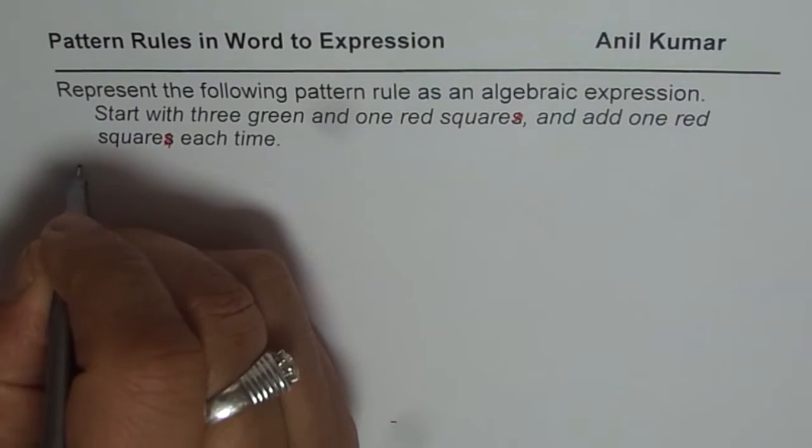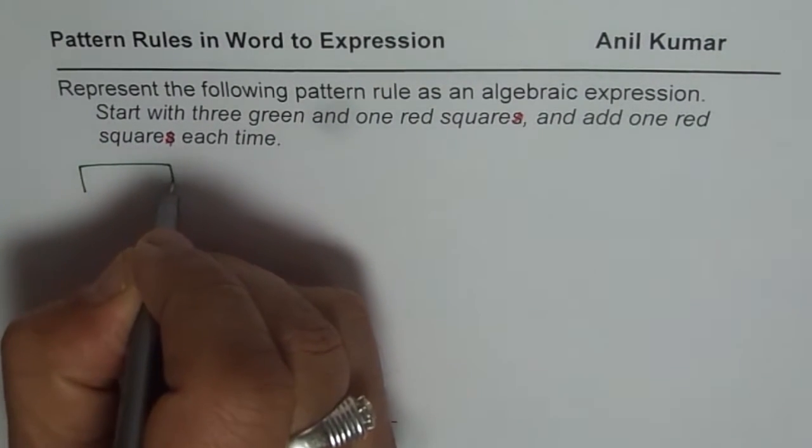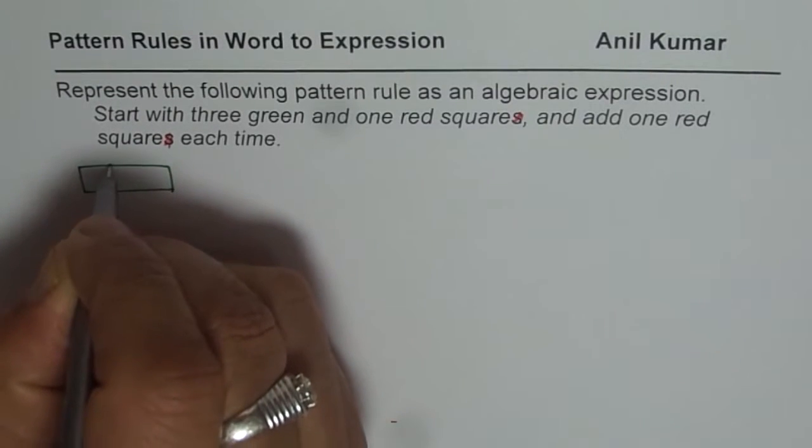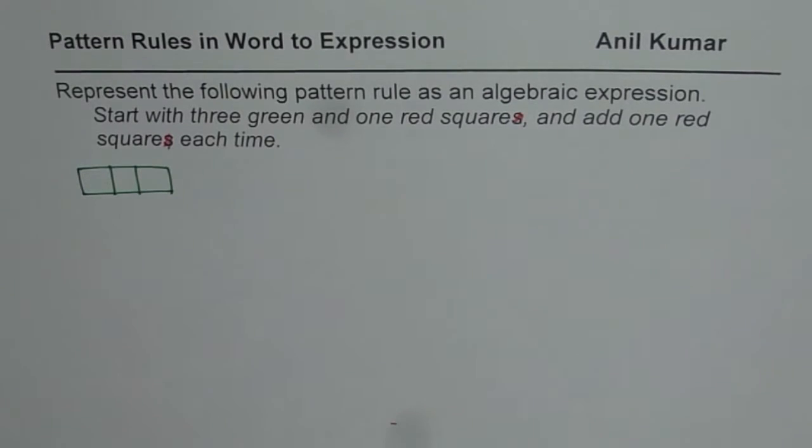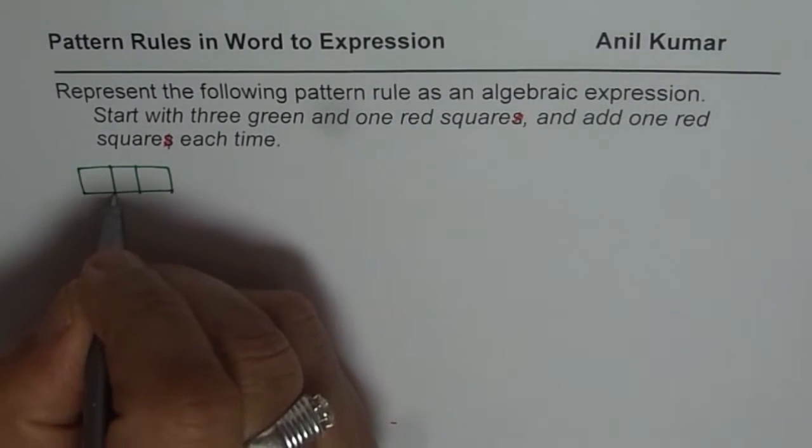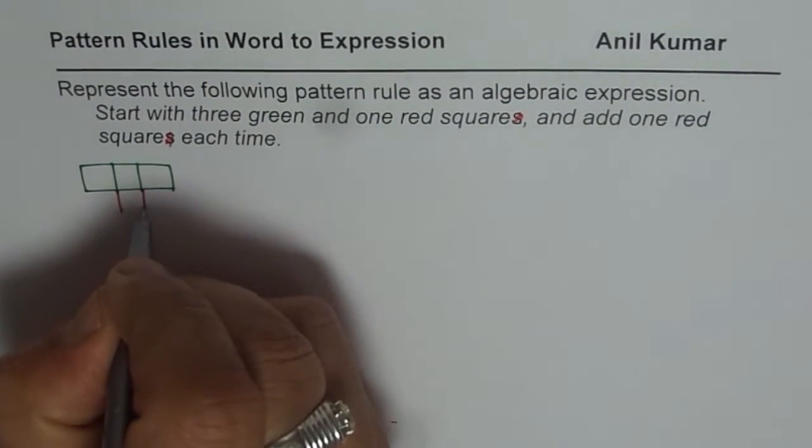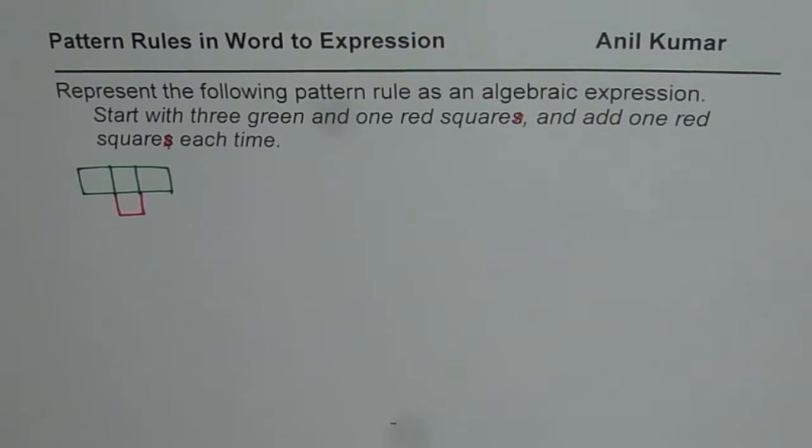So we are starting with 3 greens. Let me make 3 greens here. Let us say these are our 3 green squares and 1 red. I could draw 1 red. This is a good position since we see that the red is getting changed every time. Kind of a T. That is our first pattern.